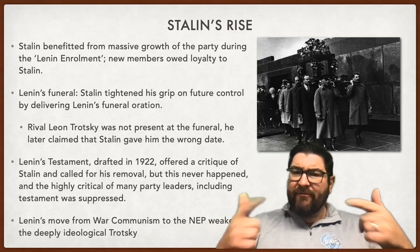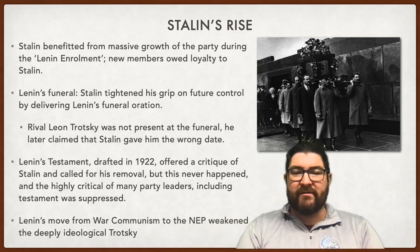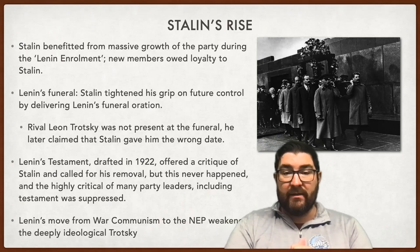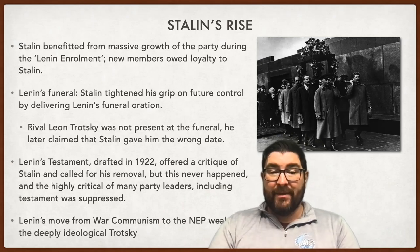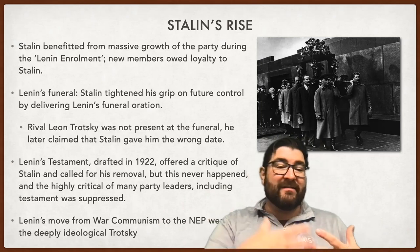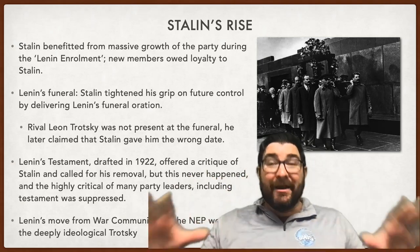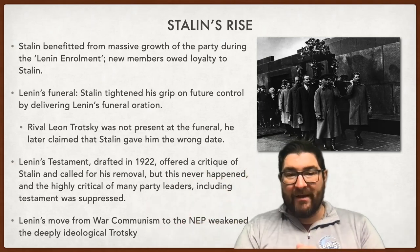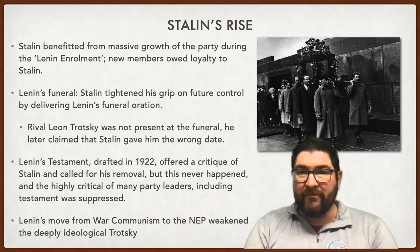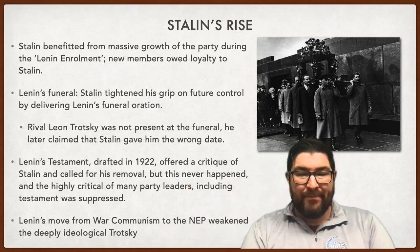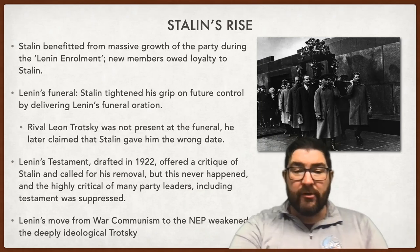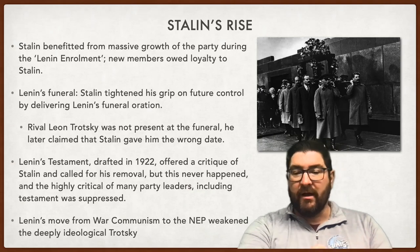Before he died, Lenin drafted what was called Lenin's Testament in 1922, offering a critique of several upper-level party leaders, including Joseph Stalin, and calling for Stalin's removal from the party. However, this never happened. The Testament was never released or published, partly because it also critiqued Leon Trotsky and others. Had it been known, Stalin might never have risen. Lenin's move from war communism to the NEP — the New Economic Policy — would further weaken the deeply ideological rival Leon Trotsky.